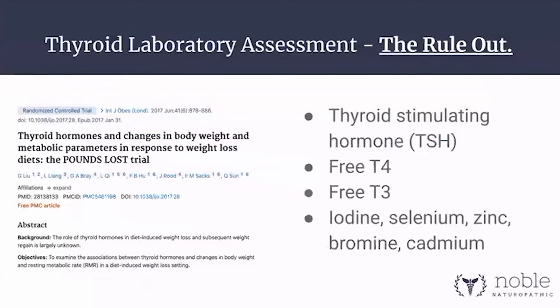The most important lab you'll see come across your desk when someone is having difficulty losing weight is a thyroid assessment, and you'll see that in the form of TSH — thyroid stimulating hormone. This is the signal that the brain sends to the thyroid to make thyroid hormone. It's regulated by a feedback loop: if there's enough, reduce the number; if there's not enough, increase the number. The range in Canada is 0.3 to 5.0, and most people in complementary and integrative medicine like to have their clients below 3.0.